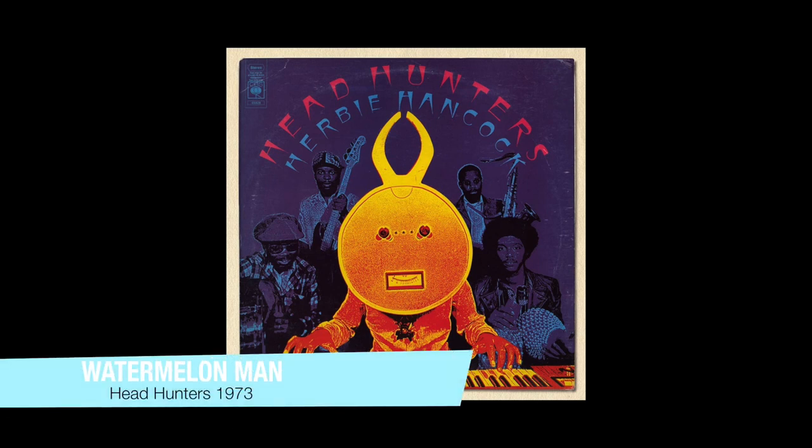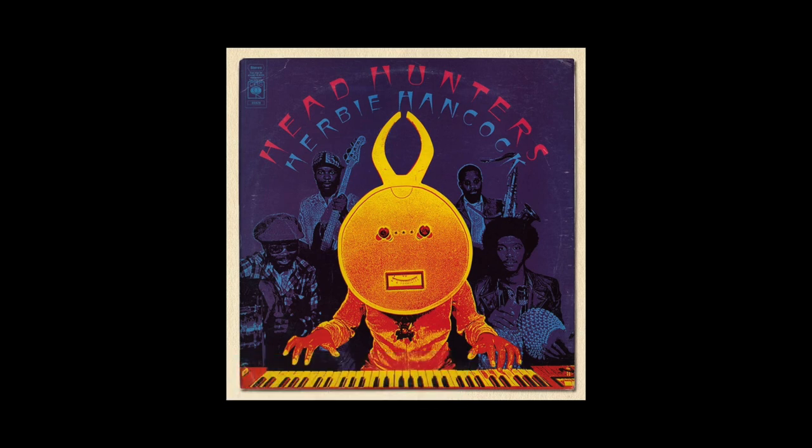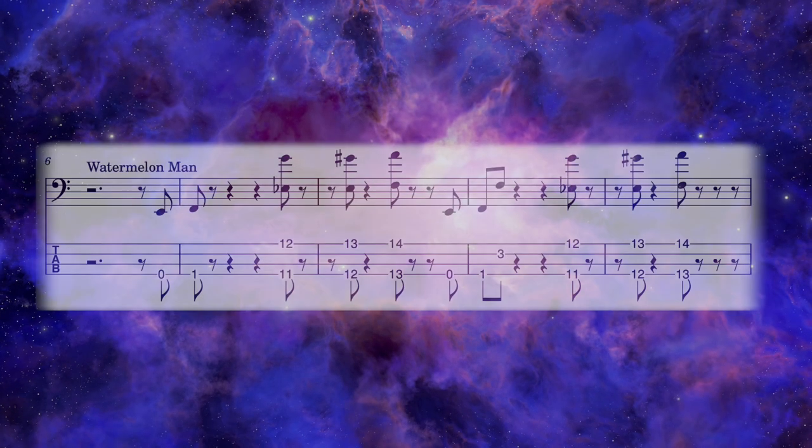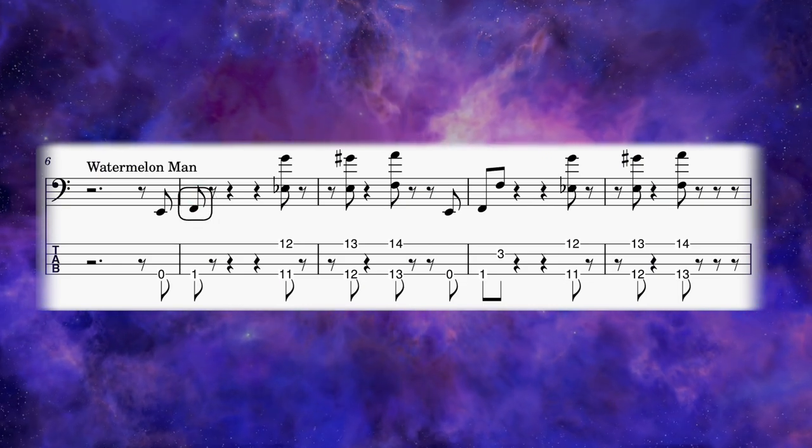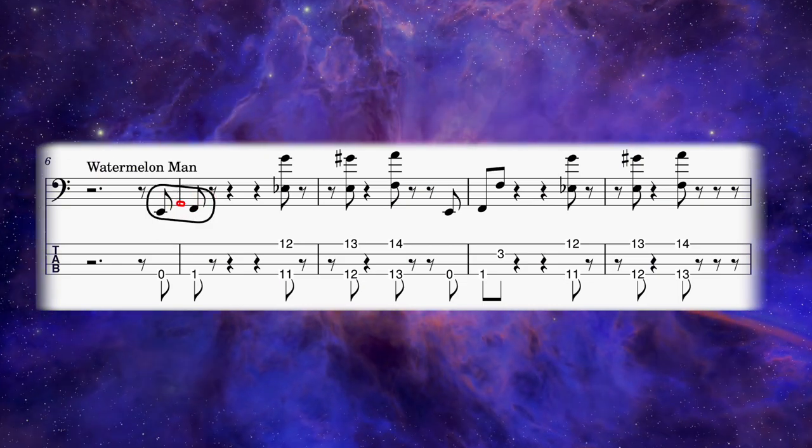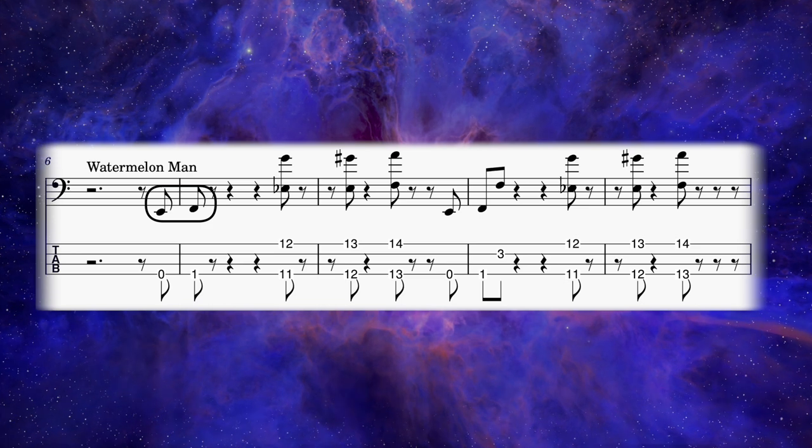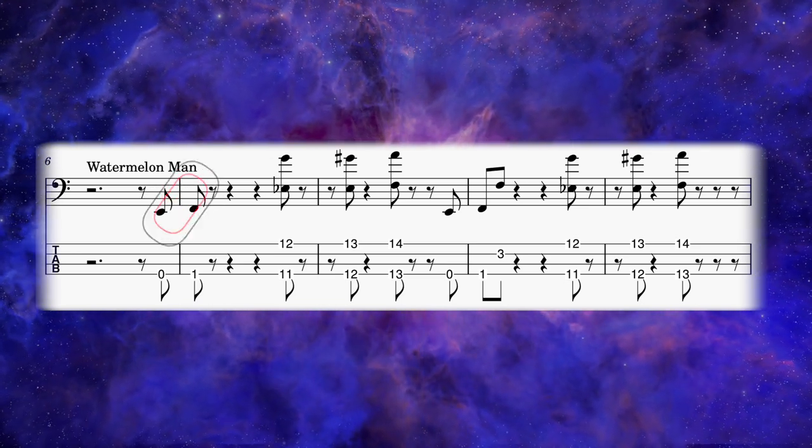The first track we're going to look at is Watermelon Man off their debut record, Headhunters. The bassline has the note F as the tonal center and it starts off with an open E leading into the root note F on the first fret.